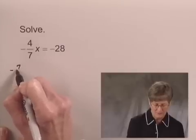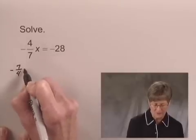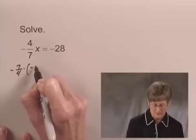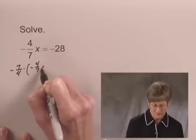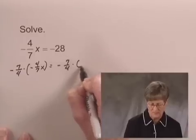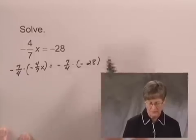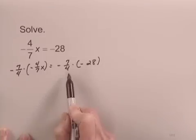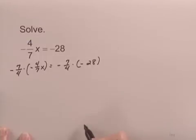I'll have negative 7 fourths, the reciprocal of negative 4 sevenths, times negative 4 sevenths x equals negative 7 fourths times negative 28, multiplying by the reciprocal of negative 4 sevenths on both sides of the equation.